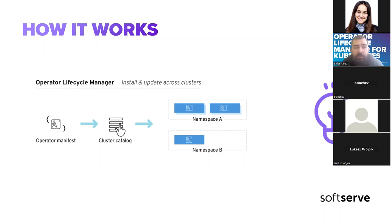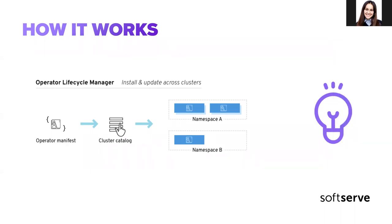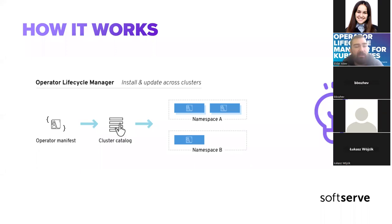Here's how OLM actually works: you have operator manifests prepared during development. You combine all your operators into a cluster catalog — a Docker image containing your operator manifests. OLM pulls from this catalog and installs operators into namespaces. You push your manifest to the catalog, and from the catalog it gets installed to the target namespaces.